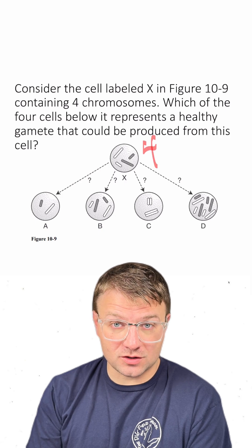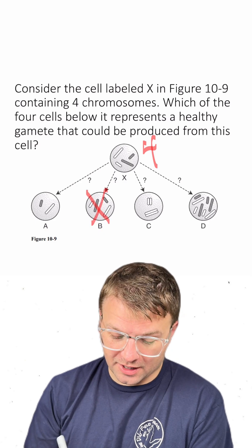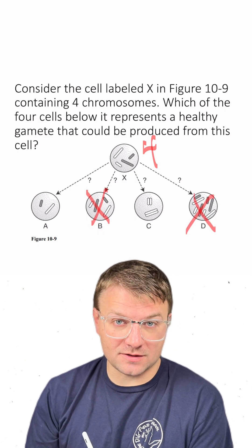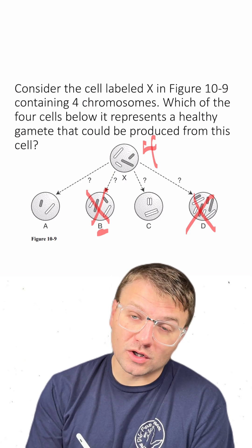So if we have four chromosomes starting, we should have two chromosomes at the end, which means B is not our answer and D is not our answer. B would be the correct answer if we're looking at mitosis. However, we're looking at meiosis.